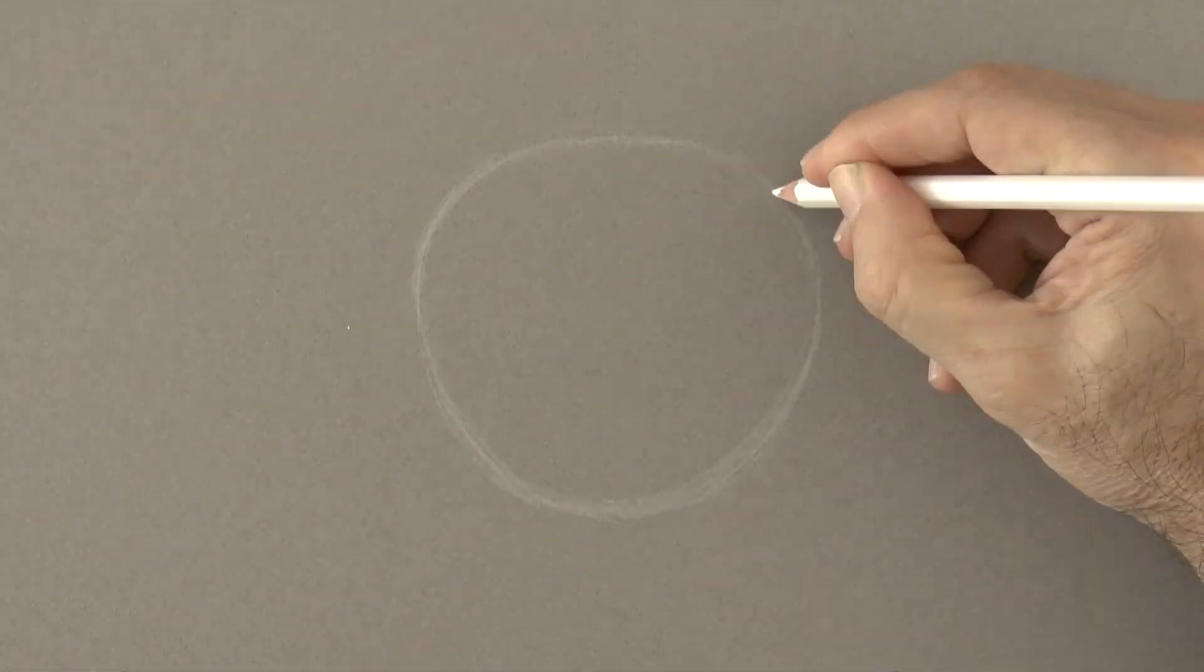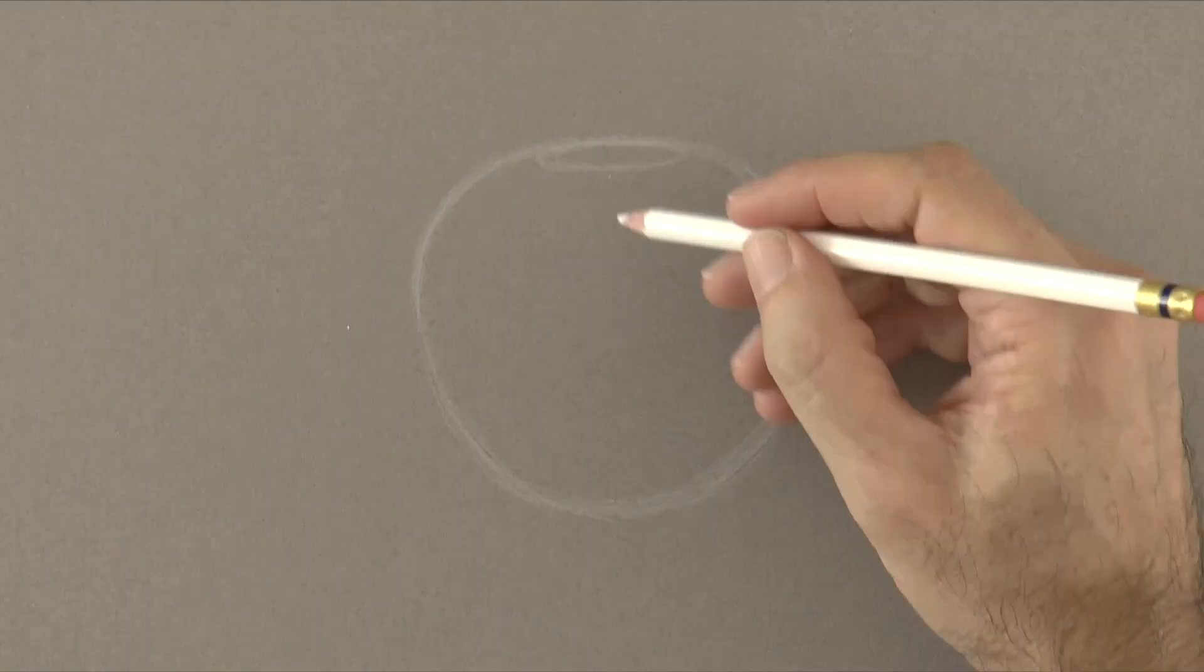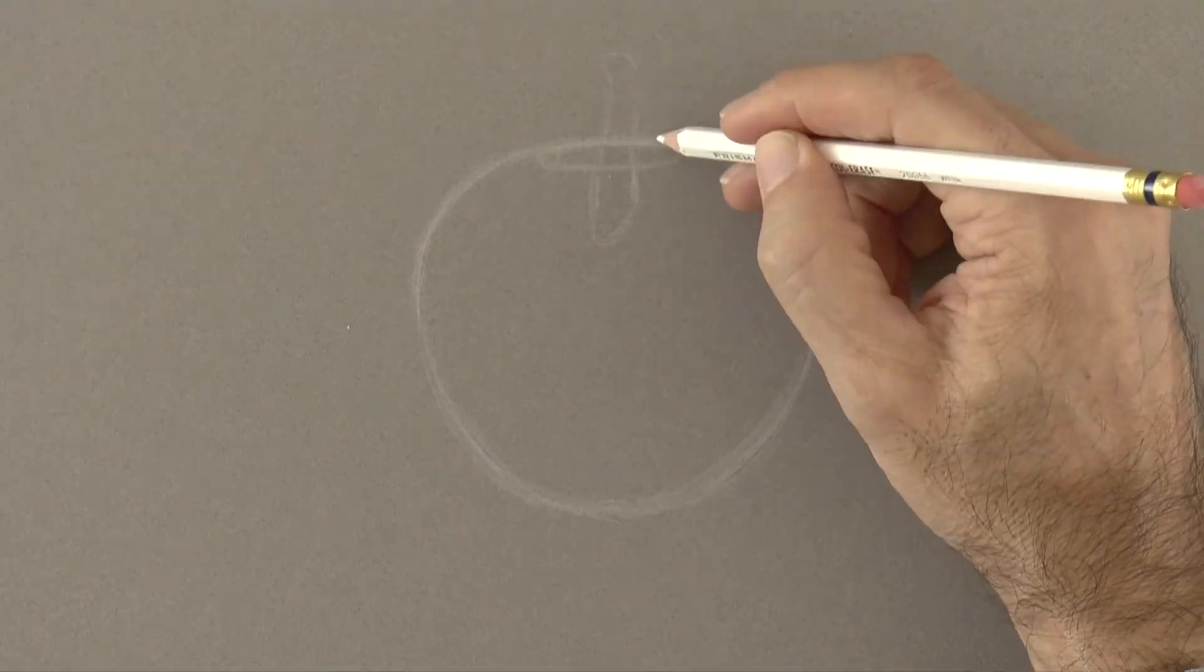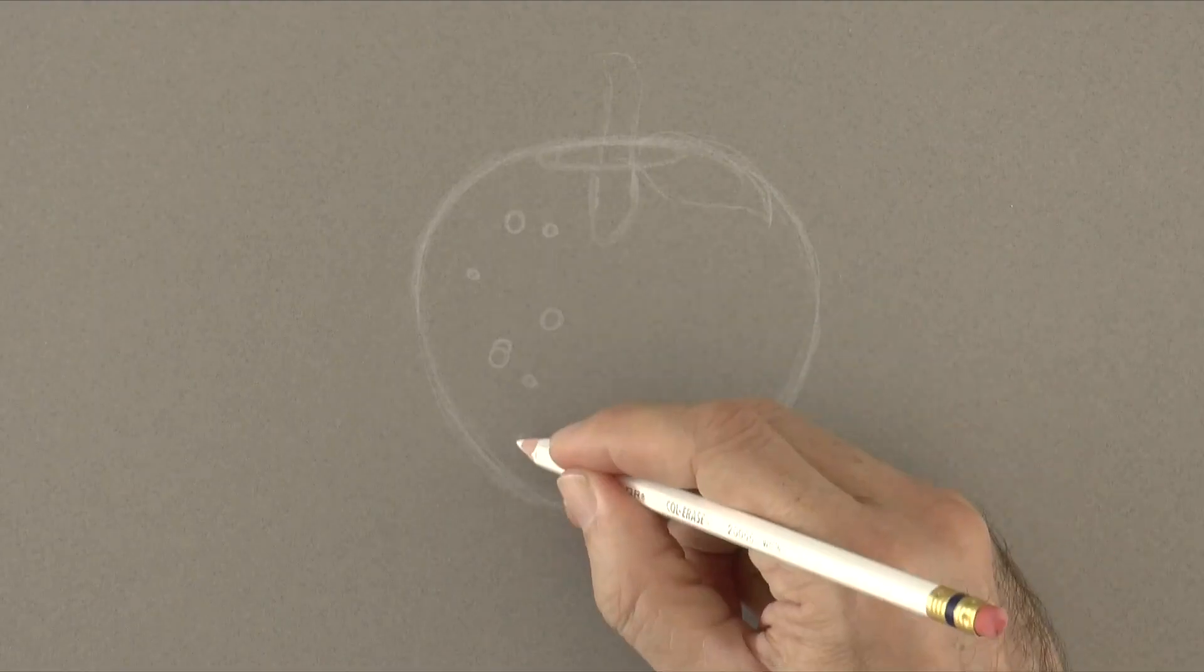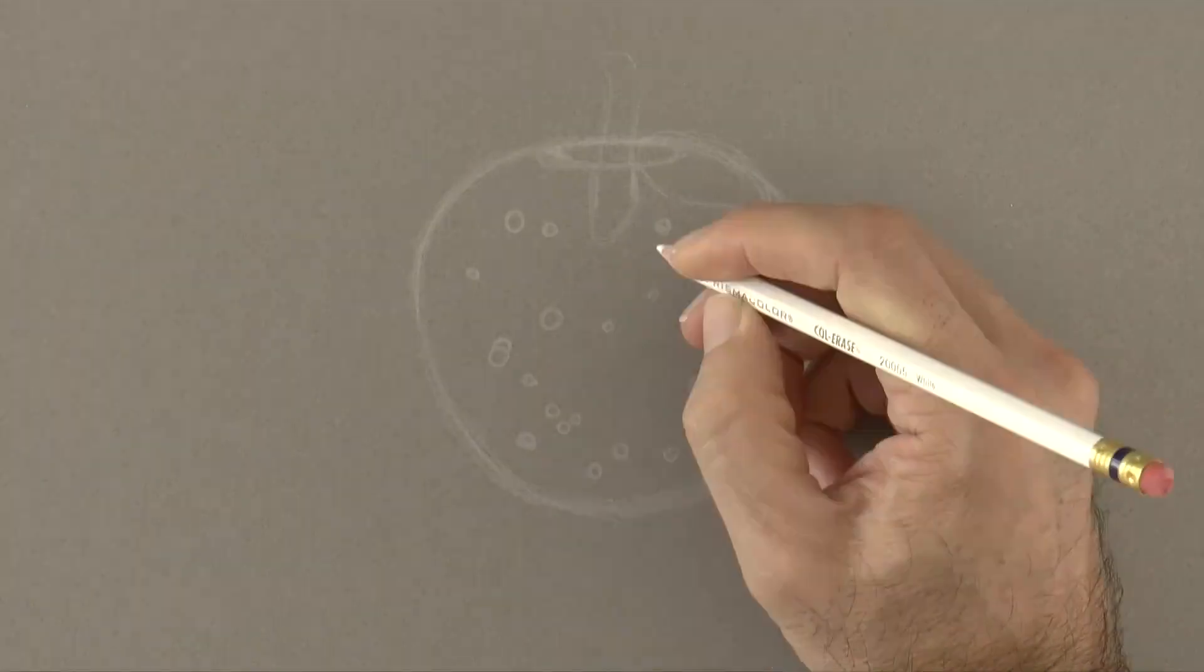We do an oval on the upper part that will be the recess and then the stem with a leaf. Inside the crystal there will be little bubbles, we do them with circles.